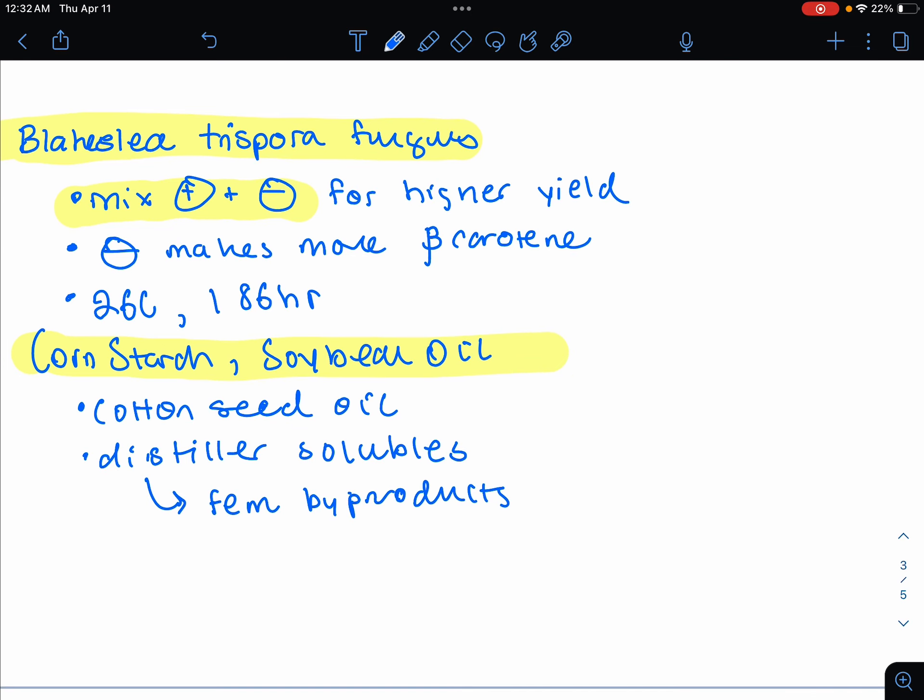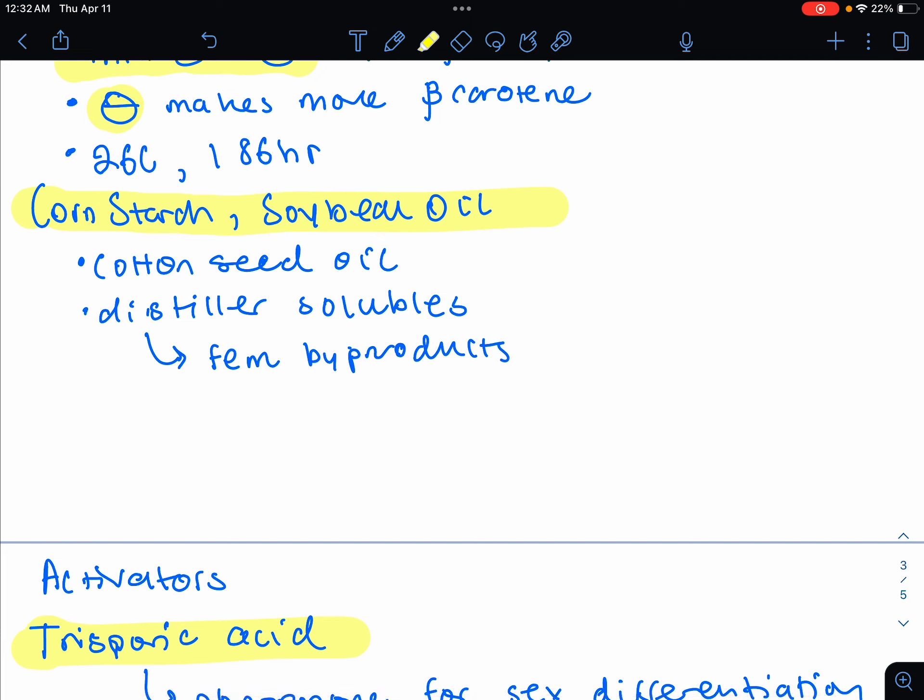The microorganism for beta-carotene is Blakeslea trispora. This is a fungus. It's a mixture of two forms. In fungi, we have positive and negative as the mating types. And this mixture will create this higher yield. Specifically, when we have our negative type Blakeslea trispora, this will make more beta-carotene. However, you need a mixture of both positive and negative for the highest yield.